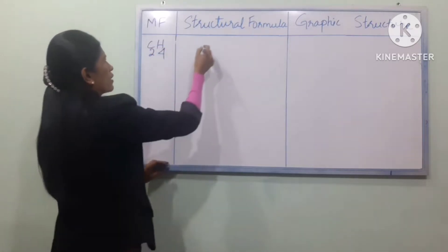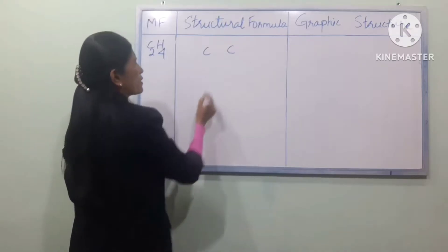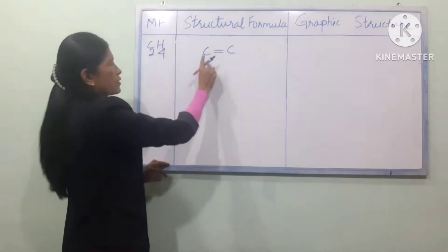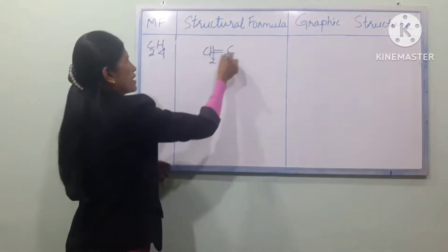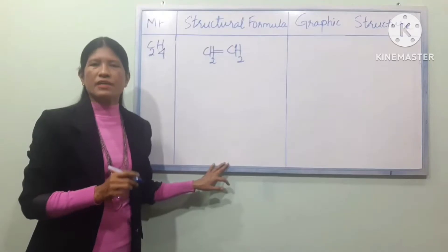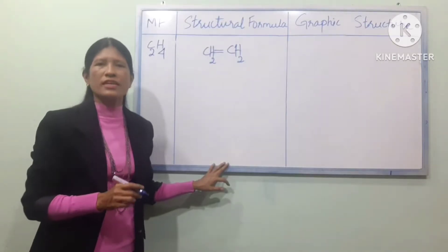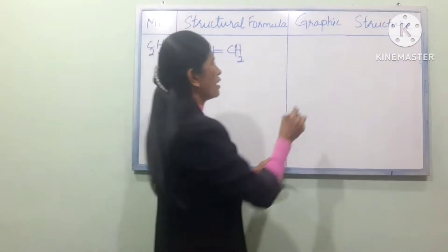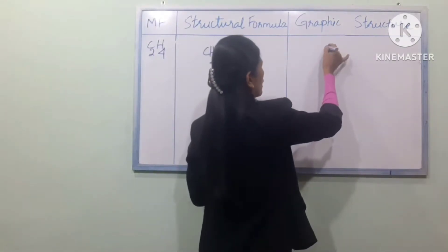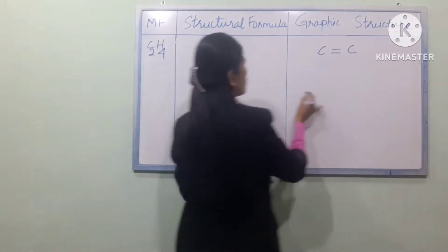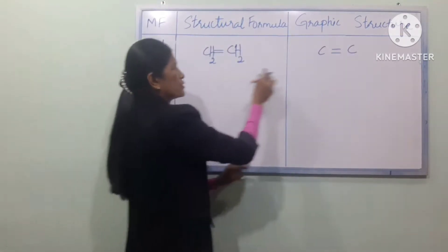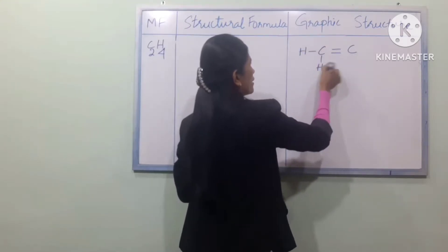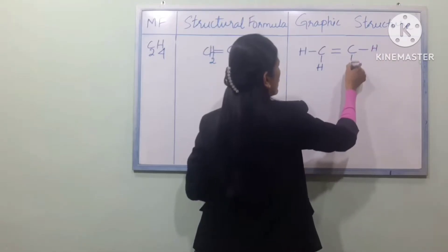C2H4 — this is the molecular formula for ethene, the first alkene. The carbon-to-carbon double bond is the defining feature. Now let's take a layer of the structural formula and draw it out.